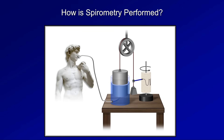Spirometry is essentially a technique used to measure airflow and some lung volumes. It's been around a long time. The basic principle behind the original method involved a patient breathing in and out through a tube continuous with an upside-down partially submerged chamber. The height of the chamber was related to how much air had been exhaled or inhaled, and this volume of air could be plotted as a function of time, providing rudimentary information about airflow.